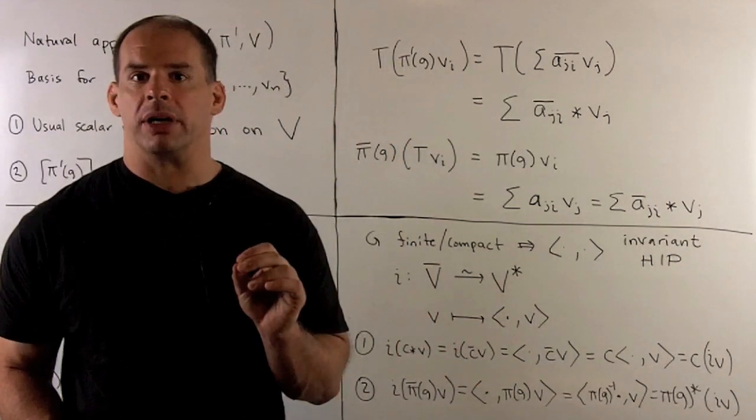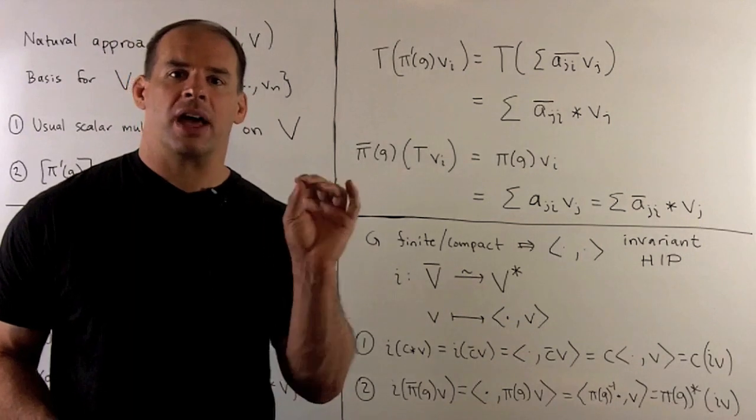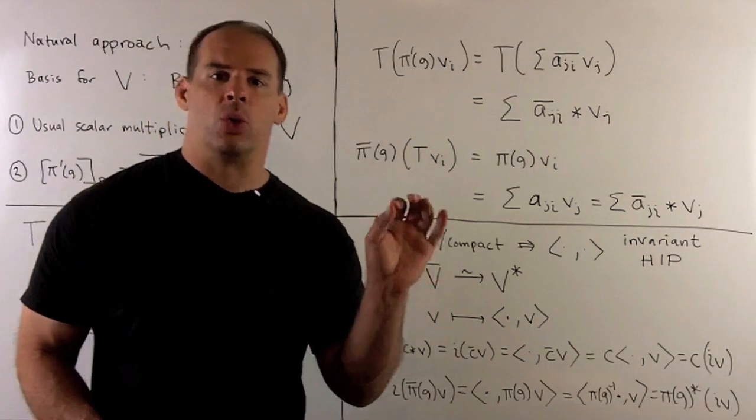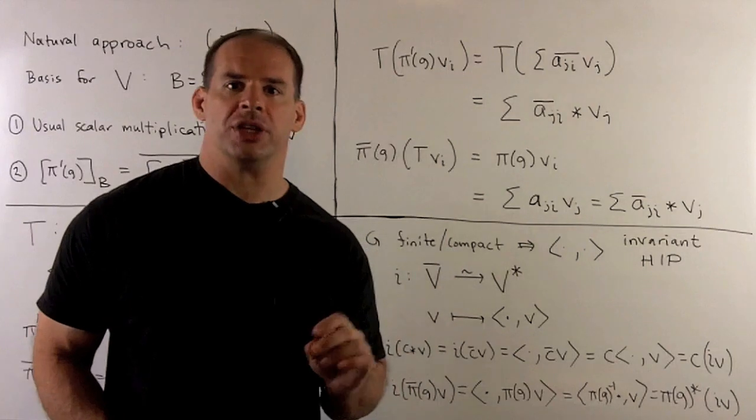That's the intertwining property. We see the conjugate representation of pi V is equivalent to the dual representation to pi V.